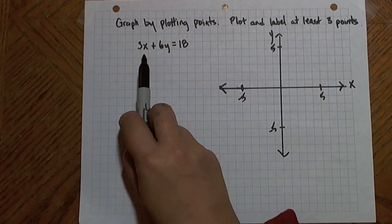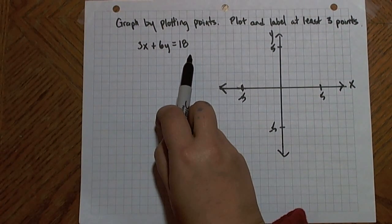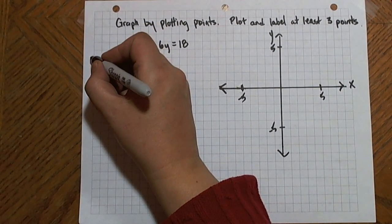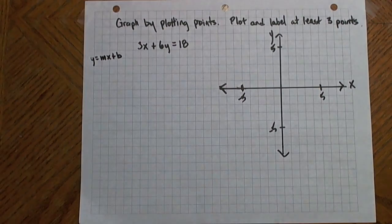So looking at my equation 3x plus 6y equals 18, the first thing I want to do is put my equation into y equals mx plus b form.